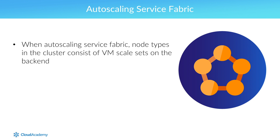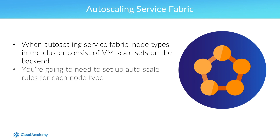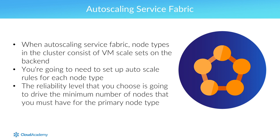If you're autoscaling Service Fabric, keep in mind that node types in the cluster consist of VM scale sets on the back end. As such, you'll need to set up autoscaling rules for each node type. When doing so, be sure to consider the number of nodes required, as the reliability level you choose drives the minimum number of nodes for the primary node type.